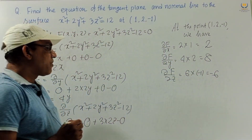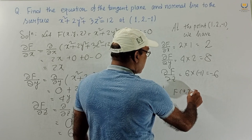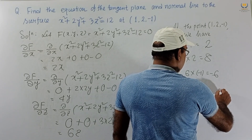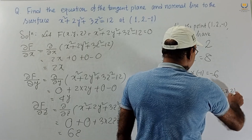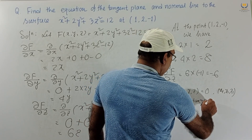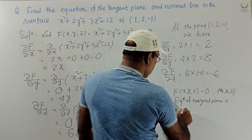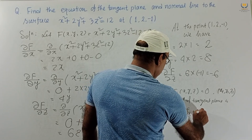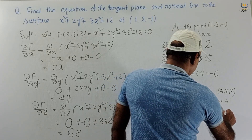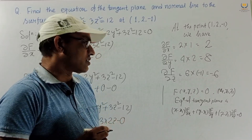We know the formula: if f(x, y, z) = 0 is the surface and the point is (x₁, y₁, z₁), then the equation of the tangent plane is (x - x₁)·(∂f/∂x) + (y - y₁)·(∂f/∂y) + (z - z₁)·(∂f/∂z) = 0.